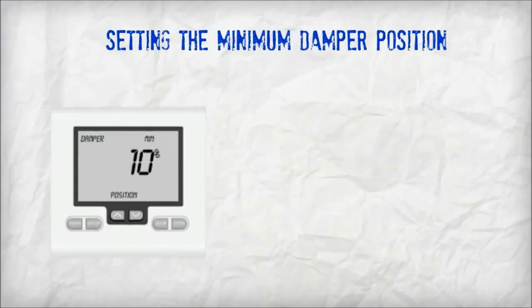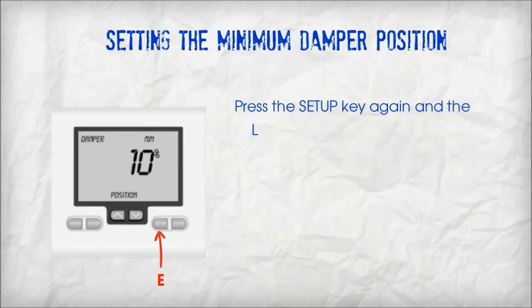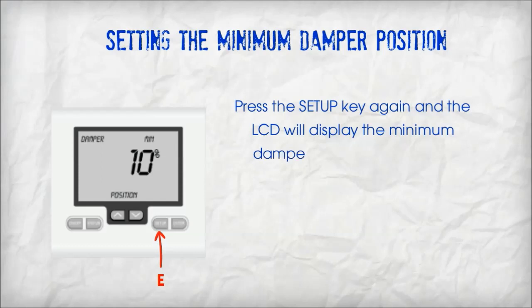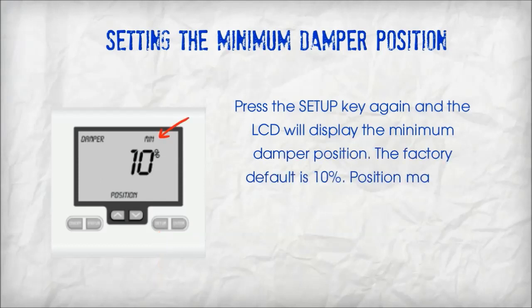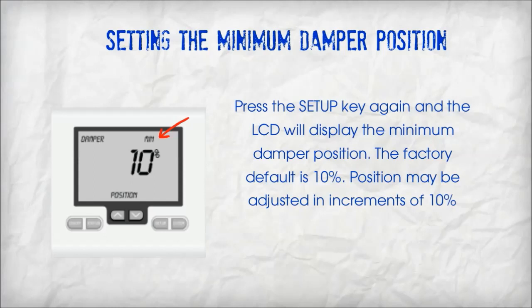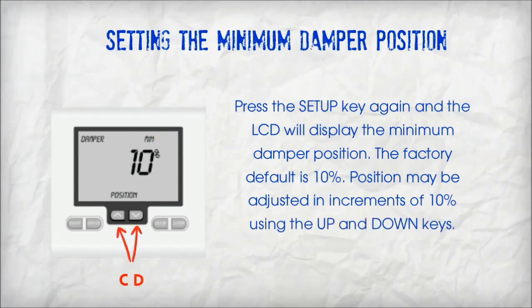Setting the minimum damper position. Press the setup key again and the LCD will display the minimum damper position. The factory default is 10%. Position may be adjusted in increments of 10% using the up and down keys.